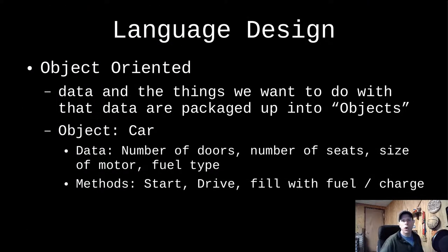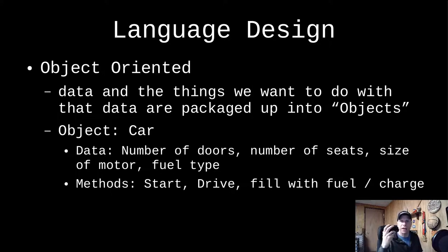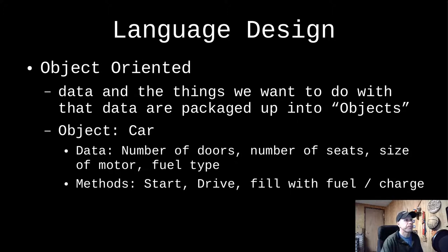Not all languages are object-oriented — C is not one of them, so you don't get those kinds of things with it. That's another part of being a higher-level language: you get these things automatically, and it's quite nice.